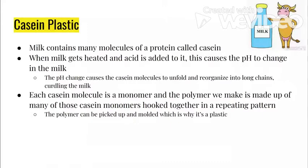When the pH change causes the casein molecules to unfold and reorganize, they form a long chain, which ends up curdling the milk. Each casein molecule is a monomer, and the polymer we make is made up of many of those casein monomers hooked together in a repeating pattern. The polymer we end up picking up — the curdled casein — can be molded, which is why it's considered a plastic.